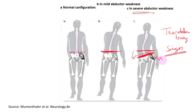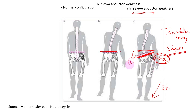In the Trendelenburg sign, a person with a very weak gluteus medius muscle, when standing on the right foot — indicating right-side gluteus medius weakness — the left-side hip will sag down. That sagging is called Trendelenburg sign positivity.